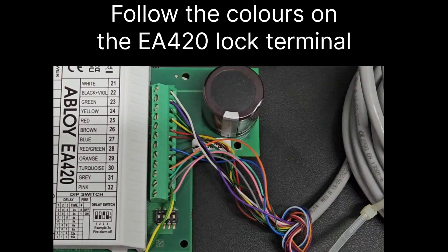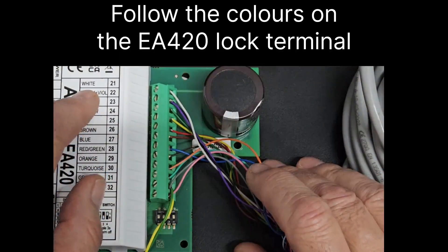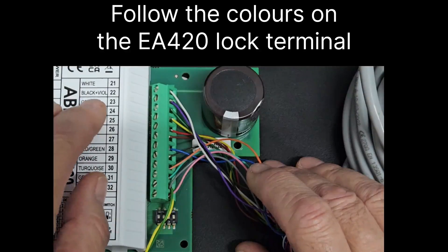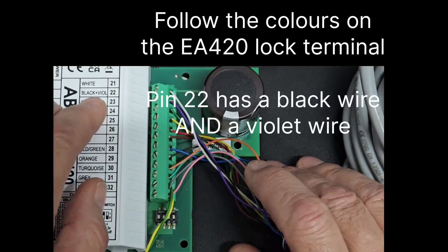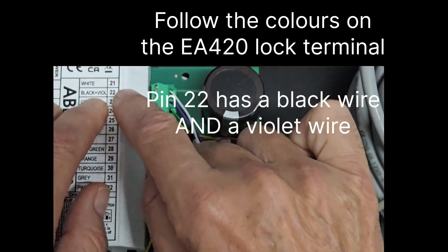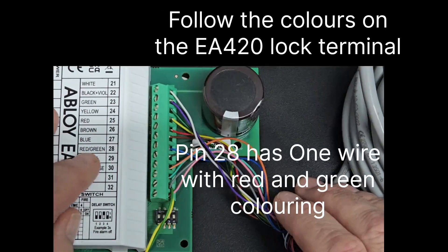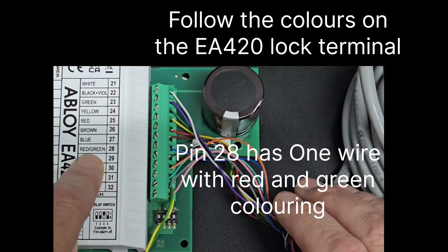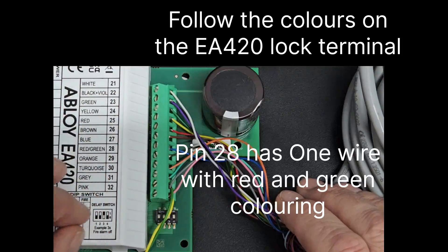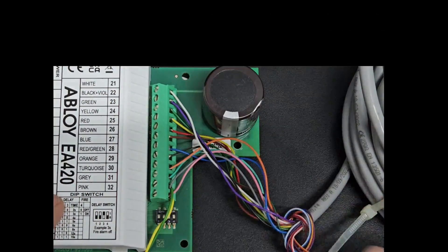From then on you simply wire the lock cables to their designated colors here. They are clearly written in the list down here. In the case where they've got black plus violet, that means black and violet, so you'll have two wires going into number 22. And then there's red slash green here, that means you have one red and green wire coming into pin 28. The rest are all straightforward, you just follow the colors indicated on the EA420 cover.